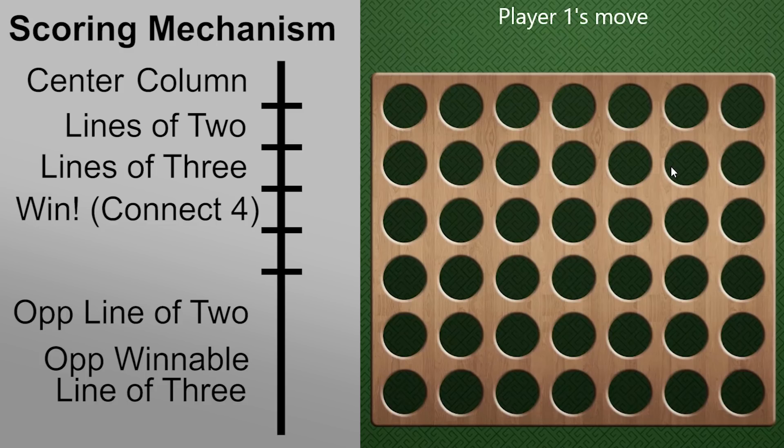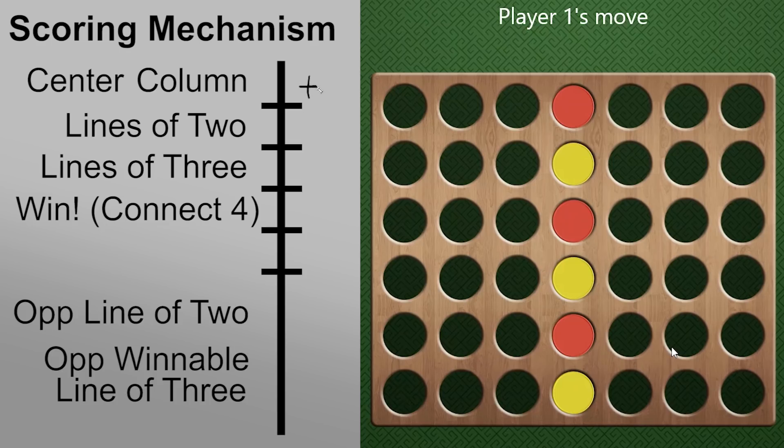Let's start assigning scores to these features. And note that this is not an exact science. So if you're actually programming this AI, we'd kind of tune these values as we went and figure out what worked the best. Playing the center column is pretty important in my eyes. So I'm going to give this a plus four as a score. And note this can be adjusted.